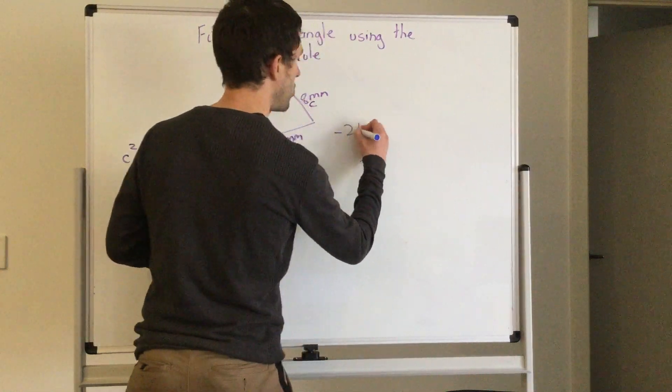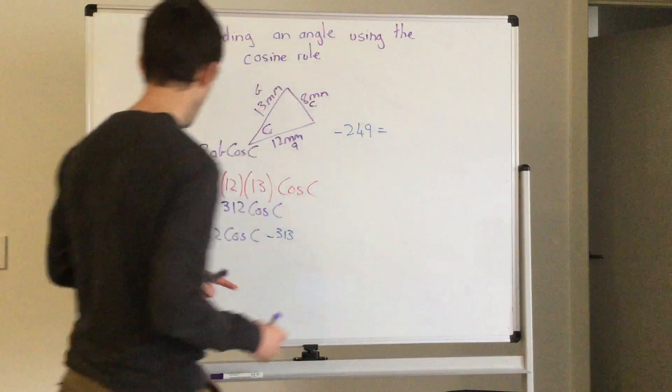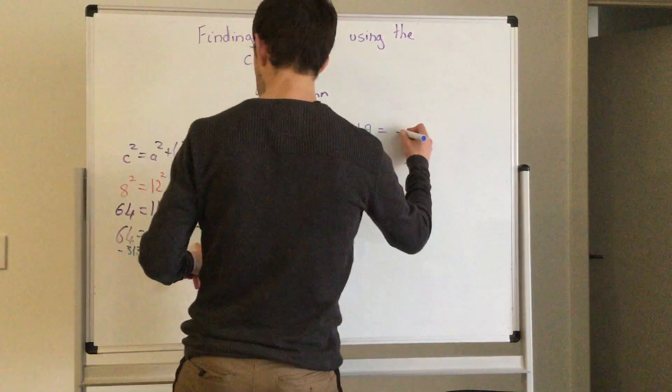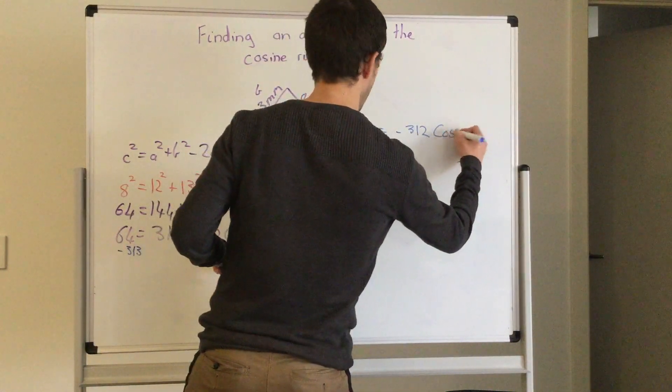So I've got minus 249 equals negative 312 cos c.